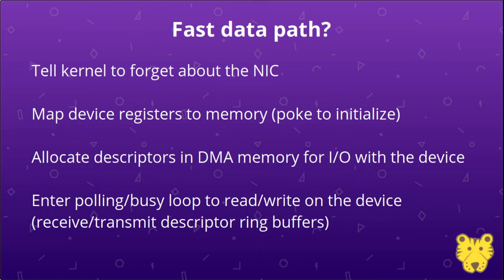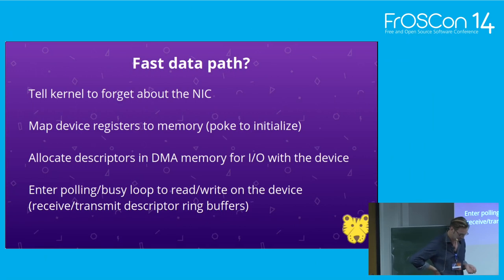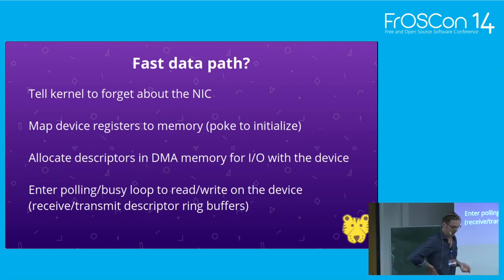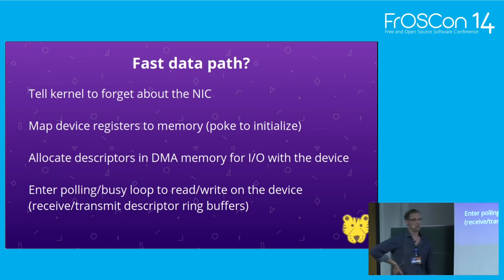How does that fast data path look like? We tell the kernel to forget about the network device. The PCI resources that make up the network device are managed by us directly — we map the device registers into memory of our process and poke them to initialize the NIC. We also allocate memory for packets on DMA huge pages for input and output with the device. DMA memory is memory that PCI devices can read from and write to directly without going through the CPU — DMA stands for direct memory access.